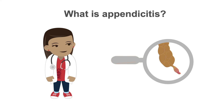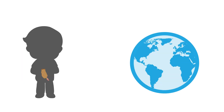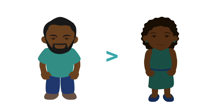In this chapter, we will discuss acute appendicitis. Acute appendicitis is inflammation of the vermiform appendix. It affects about 233 out of 100,000 people worldwide. It occurs most frequently in the second and third decade of life, with the highest incidence in 10 to 19 year olds. Males are slightly more affected than females, with a lifetime incidence of 8.6% in males and 6.7% in females.